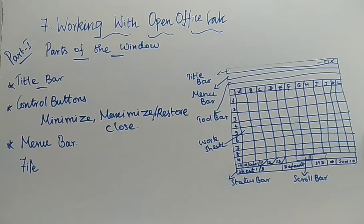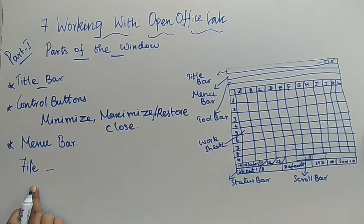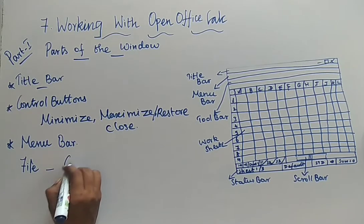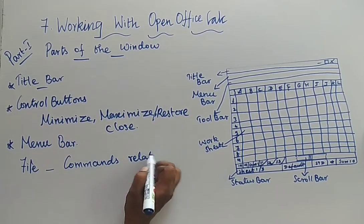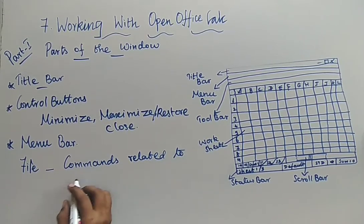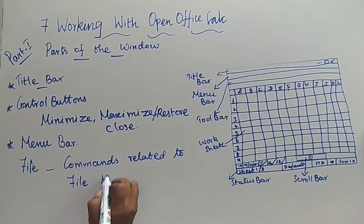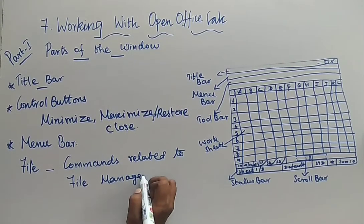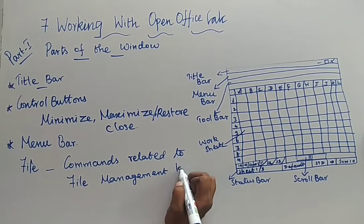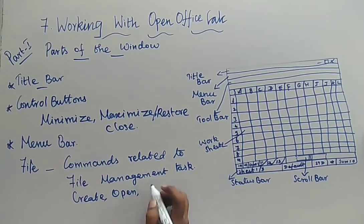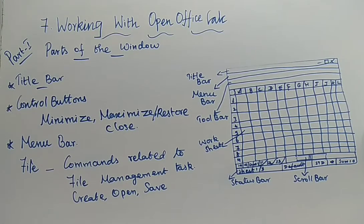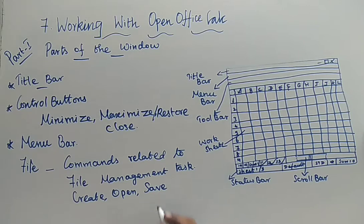In that the first one is your File menu. The file menu is going to have all the file management tasks — it is going to have commands related to file management tasks. What are the file management tasks? It can be creating a new file, opening an already existing file, save a spreadsheet or save as a spreadsheet, or close, then print.